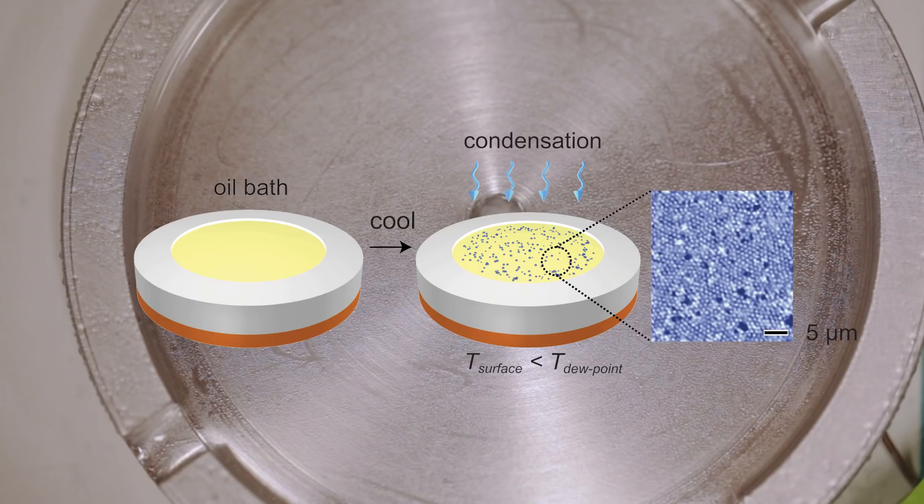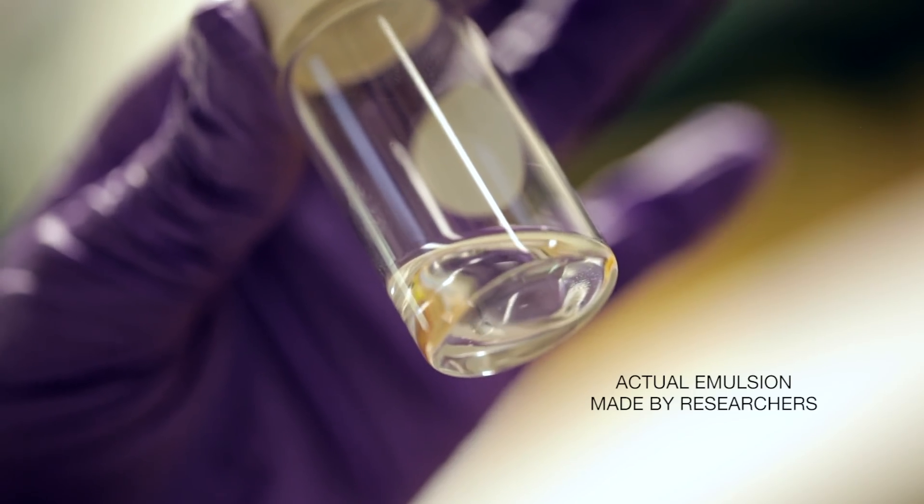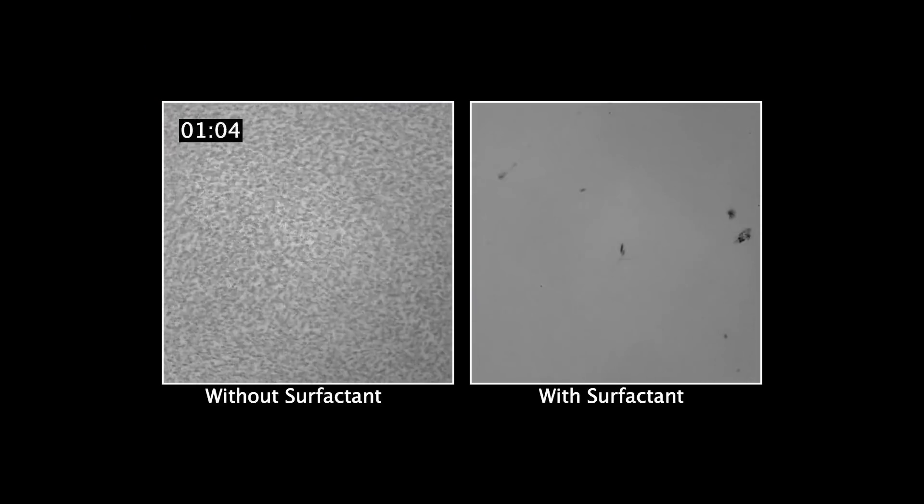As it cools, the condensing water forms droplets at the surface that spread through the oil-surfactant mixture, forming uniform nano-scale droplets. These droplets are so tiny and uniformed that they are hard to even see under a microscope.